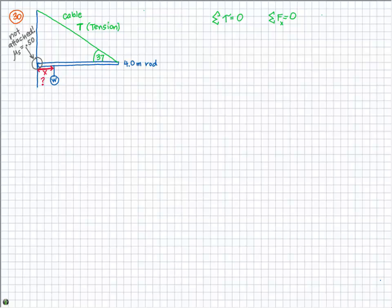We're going to have X forces and Y forces. When you solve a problem with torque and things are in equilibrium, you need to think about where you want your pivot point. You get to choose, but you want to be smart about it. It's always good to choose your pivot point at a place where there are lots of unknowns, because if there's an unknown force at your pivot point, the distance there is zero, so the torque contribution is also zero.